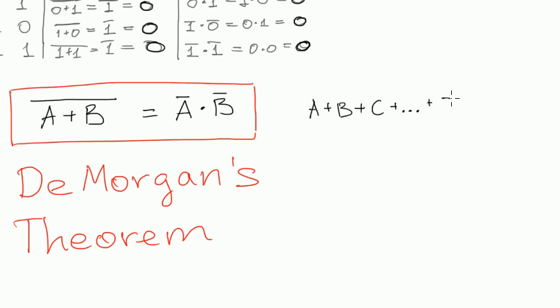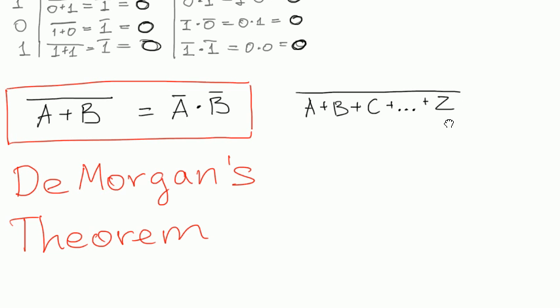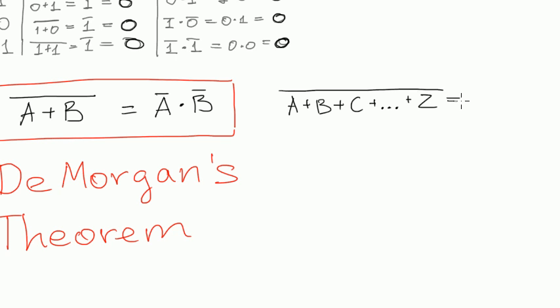And all negated will always equal to A negated, ah sorry, multiplied by B negated, multiplied by C negated, multiplied by so and so on, Z negated.